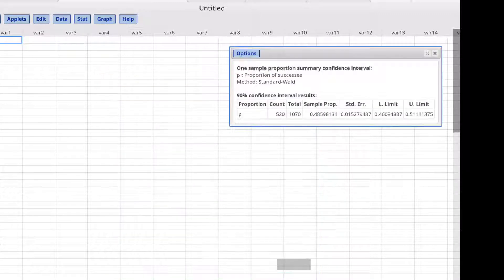Click Compute. The first thing we were to find was the point estimator, which is the sample proportion, which we see here, 0.486 if we round to three decimal places.